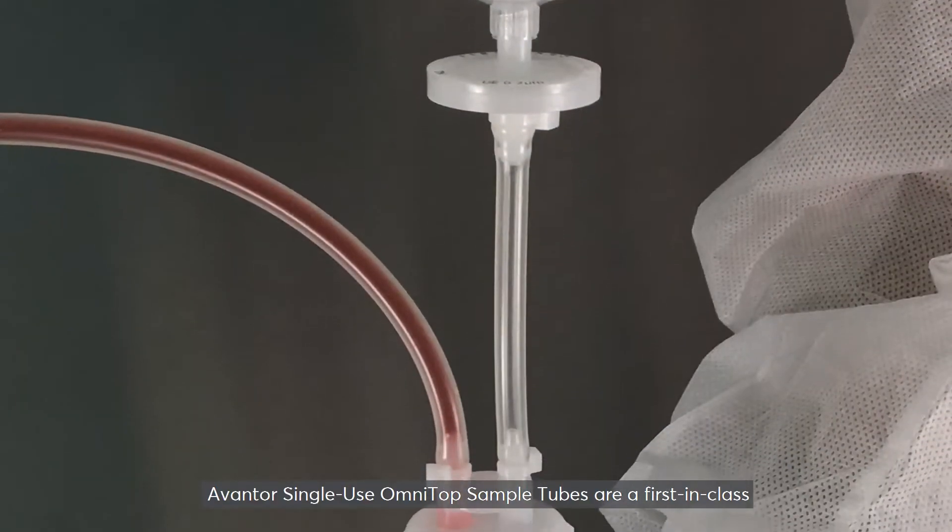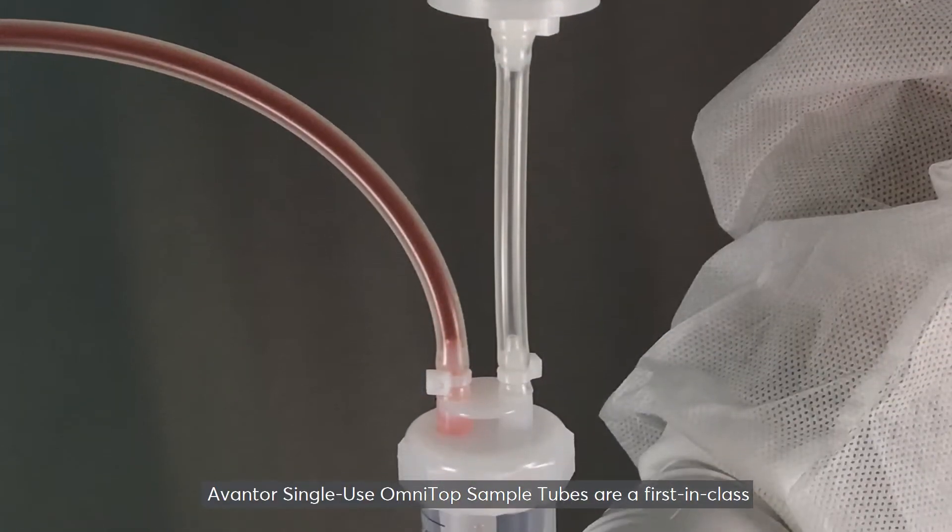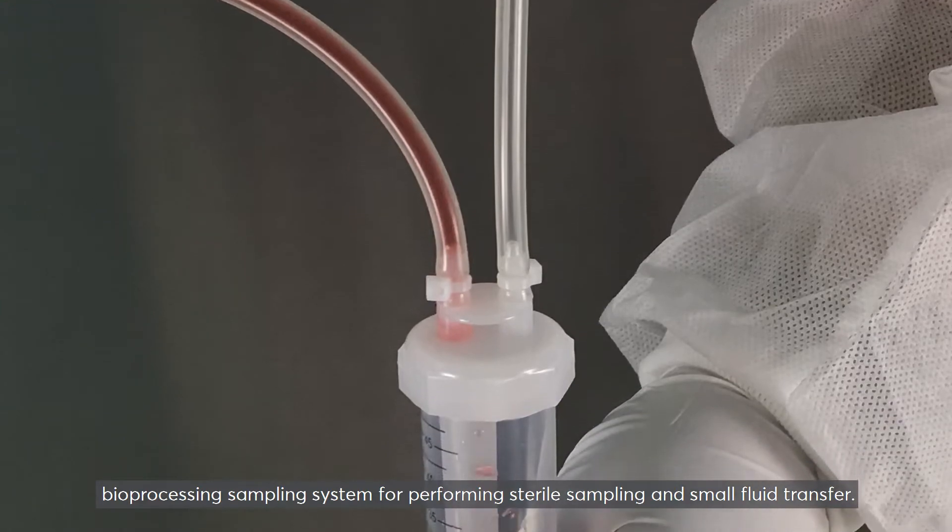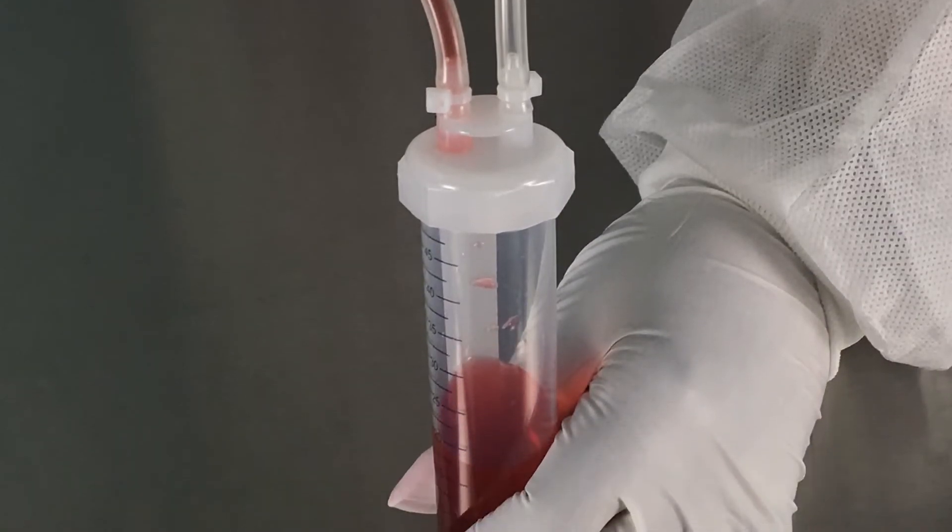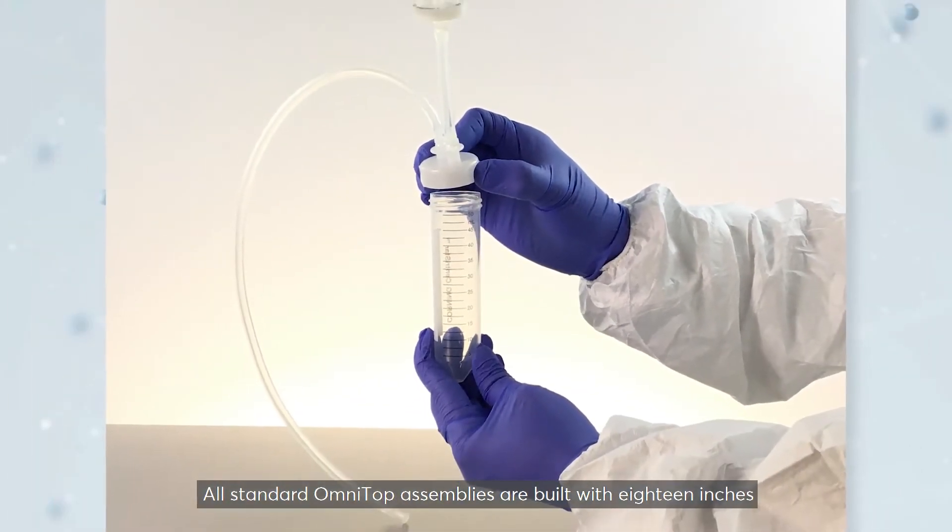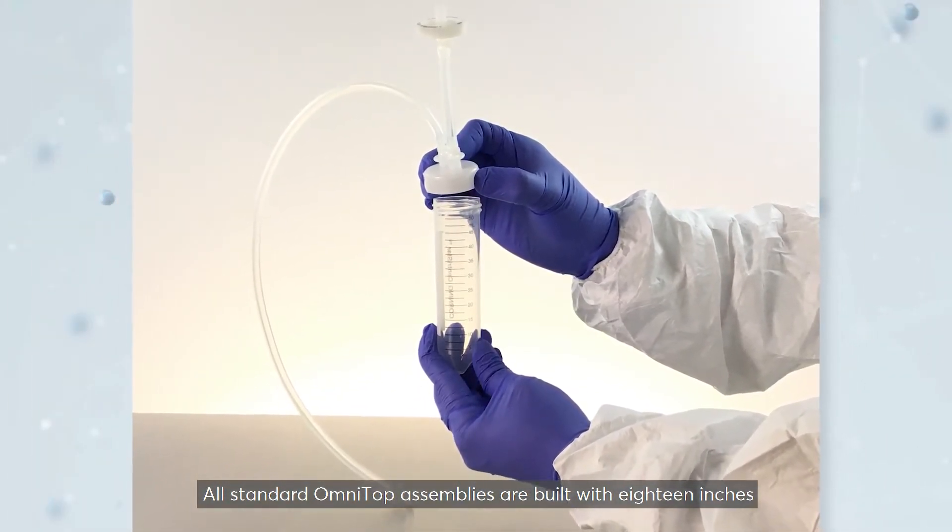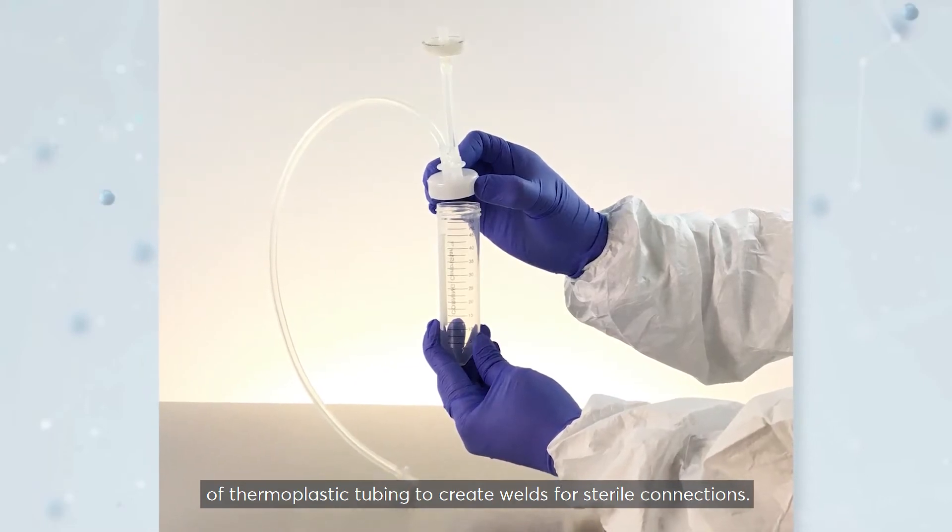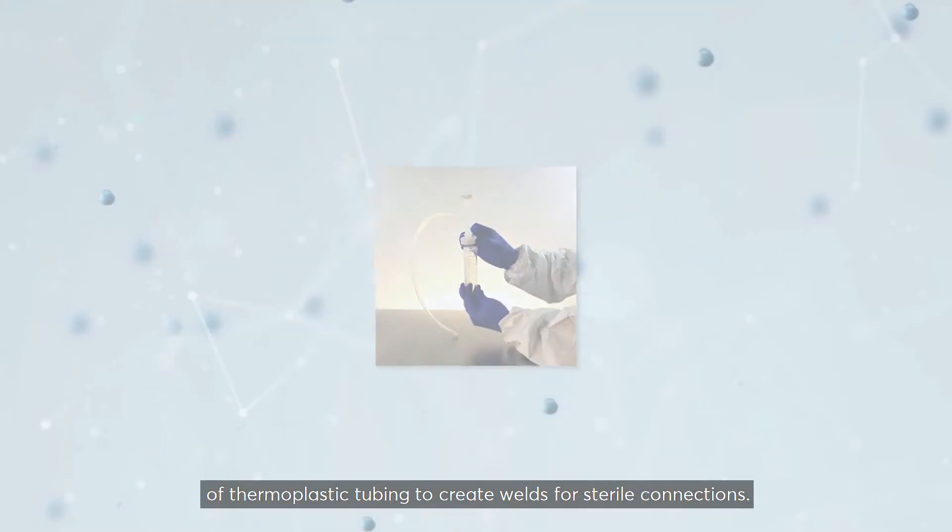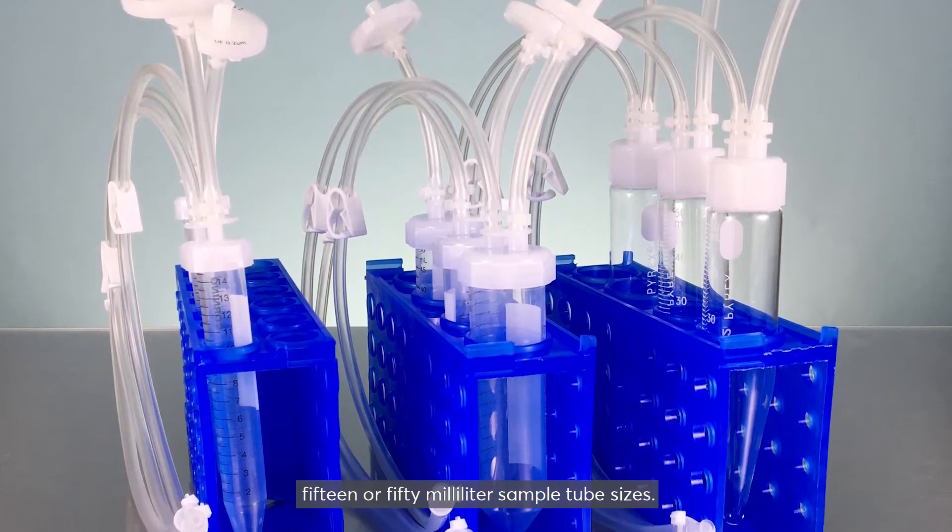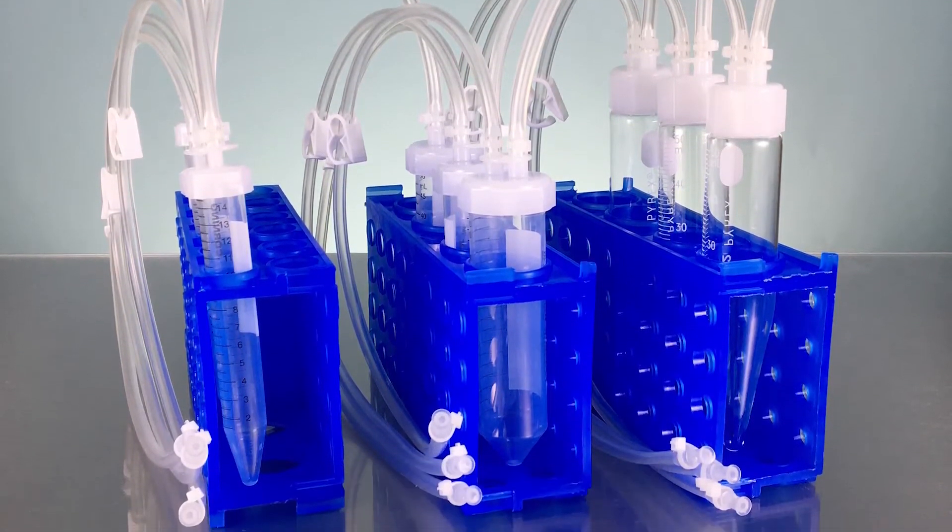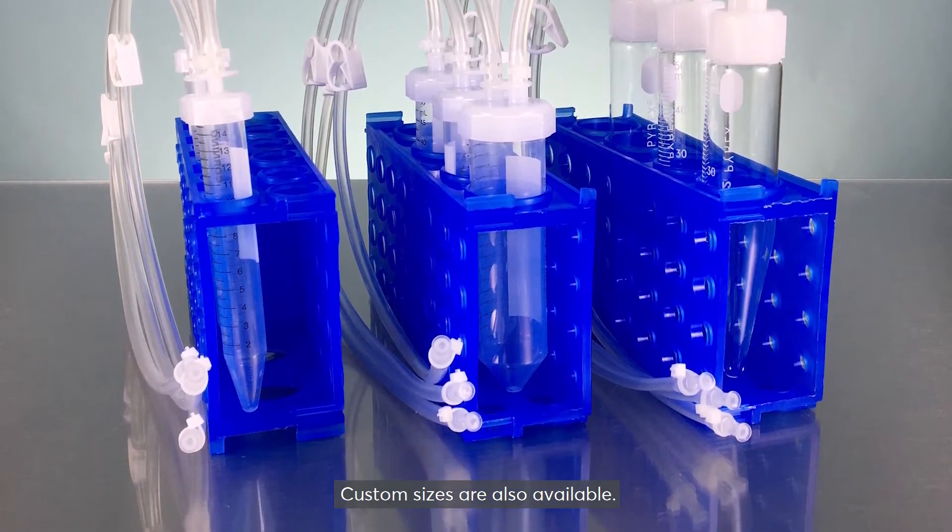Avantor single-use OmniTop sample tubes are a first-in-class bioprocessing sampling system for performing sterile sampling and small fluid transfer. All standard OmniTop assemblies are built with 18 inches of thermoplastic tubing to create welds for sterile connections. Multiple standard configurations are available in both 15 or 50 milliliter sample tube sizes. Custom sizes are also available.